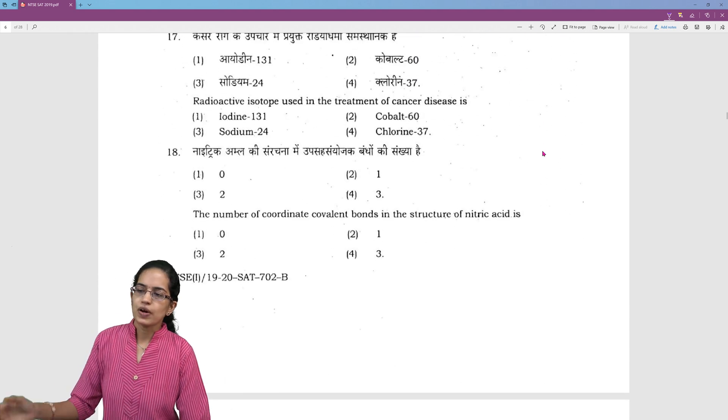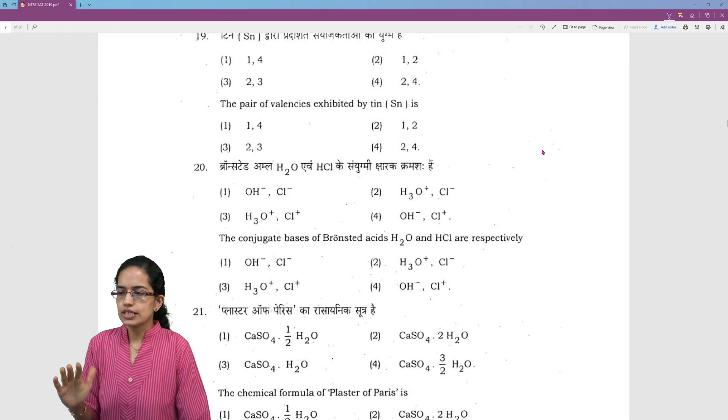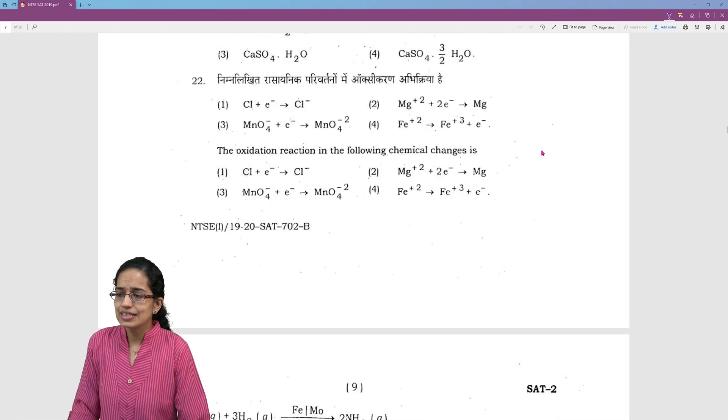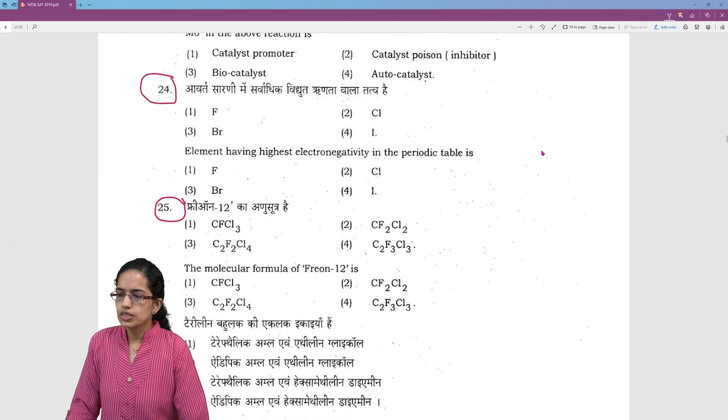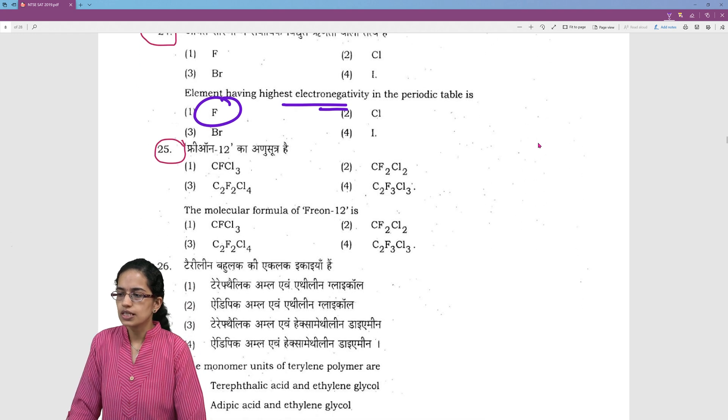The next kind of questions is finding out the covalent bonds, the ionic solutions, the oxidation reduction equations, the valencies. So those are kind of common questions that are asked. Then elements with highest electronegativity is fluorine. Again questions based on periodic table as we said are important.